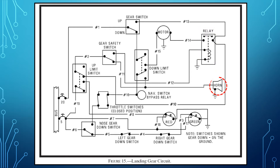The horn will sound whenever the throttle is retarded beyond a certain point and the landing gear has not been lowered. The horn will also sound if someone attempts to raise the landing gear while the aircraft is sitting on the ground. The push-to-test circuits on the down and up indicator lights allow the pilot to determine whether these lights are functioning properly or not.